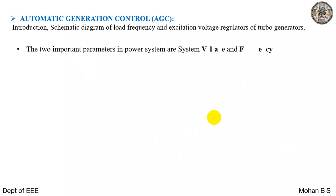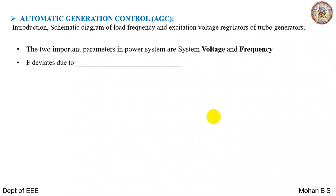The two important parameters in power systems are voltage and frequency. Frequency deviates, as we have seen in earlier videos in module 1, due to imbalance between generation and load.